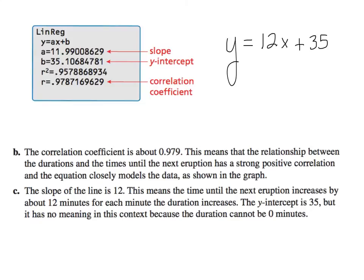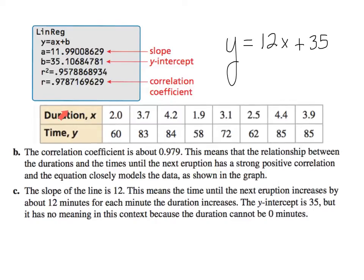So once again, I'm going to read this again because the slope may have been confusing for you. The table, let me bring back the table. The table, x is the duration of minutes. Time y is how many minutes until the next eruption. So since 12 over 1, the y value on top, it means the time until the next eruption increases by about 12 minutes. So we're here. The time until the next eruption increases by 12 minutes for every 1 minute increase in the duration of the eruption. So that's how you would explain the slope.